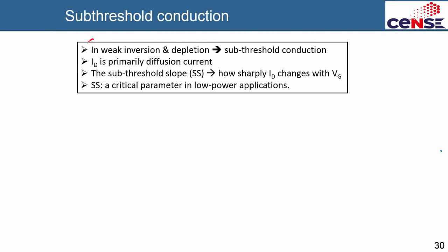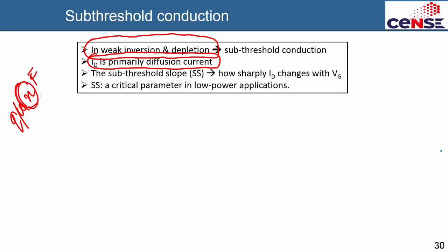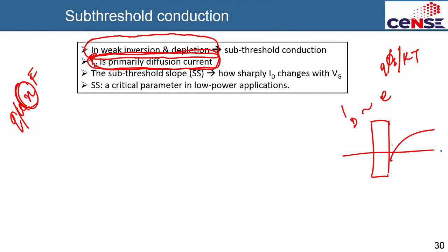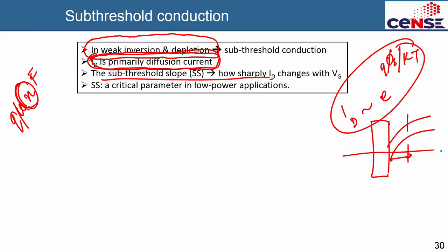Sub-threshold conduction happens mostly in weak inversion, and also in depletion — before weak inversion has occurred. In sub-threshold conduction the channel charge is very very low, so drift transport is negligible because drift depends on Q·μ·E. If the charge n is very low, the current ID is primarily diffusion current, which depends exponentially on the band bending at the surface, like exp(q·ψs / kT). Here ψs is the band bending in the MOSFET diagram. This is a critical parameter in low-power applications.